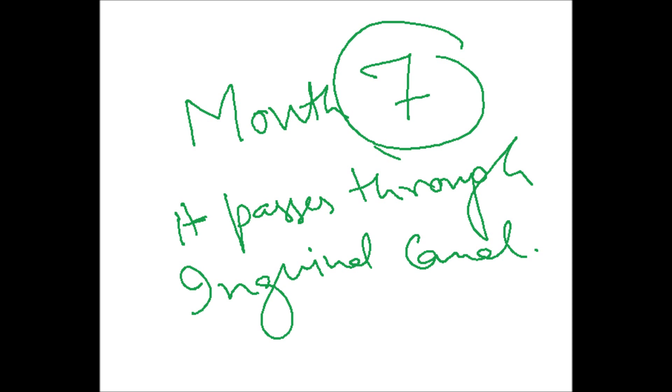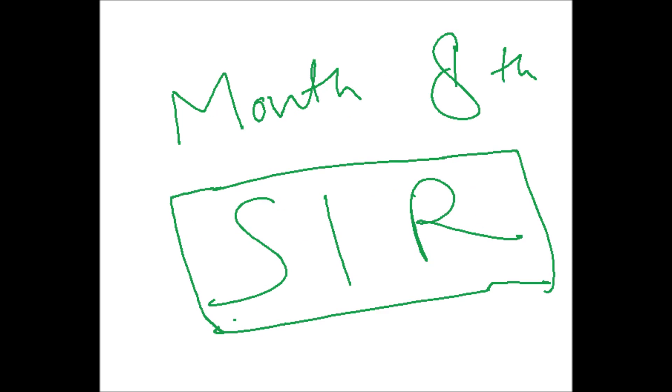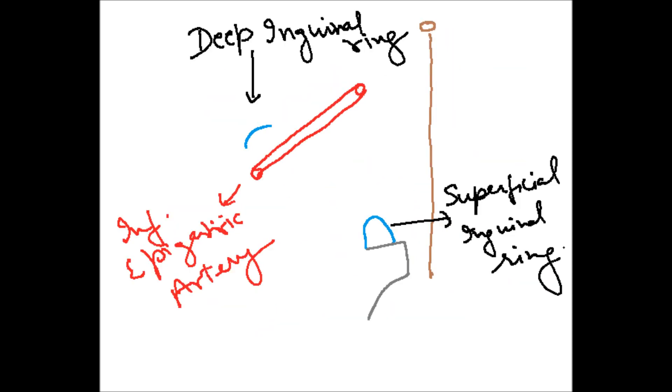And the next month, that is in the seventh month, it passes through the inguinal canal, and by the eighth month it reaches the superficial inguinal ring.